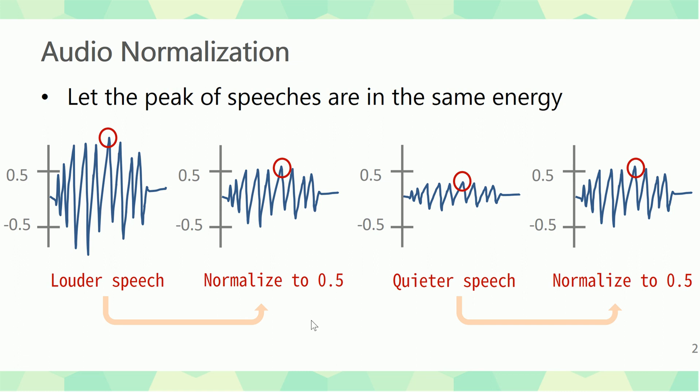What is audio normalization? You can see on the left side we have a louder speech and on the right side we have a quieter speech. The louder speech has a max amplitude that's higher, around 0.9, and the right side, the quieter speech, has a max around 0.3.